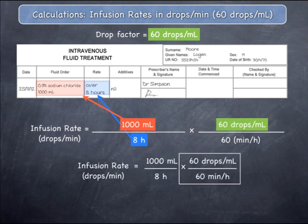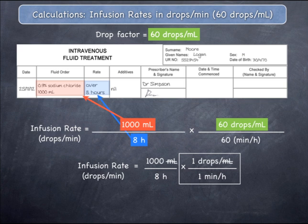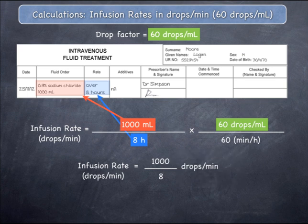If you consider the second fraction, 60 over 60 will cancel to 1 over 1. The units of mils will cancel, and so will the units of hours, leaving a final unit of drops per minute. Multiplying by 1 over 1 does not change the value of the first fraction, so you can remove this second fraction entirely from the formula.